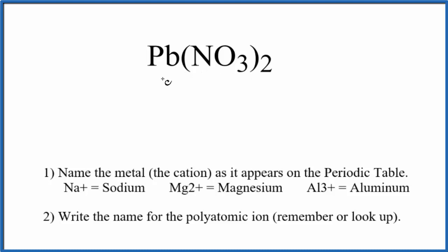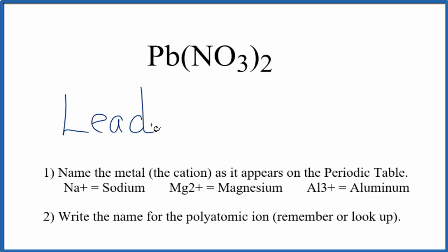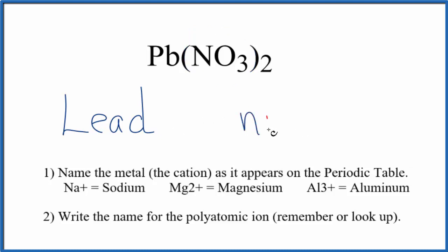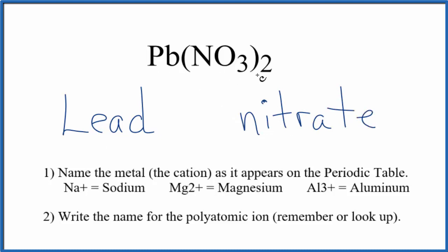We'll first write the name for Pb as it appears on the periodic table — Pb, that's lead. Next, we'll write the name for this polyatomic ion, the nitrate ion. So far, we have lead nitrate as the name for Pb(NO₃)₂.